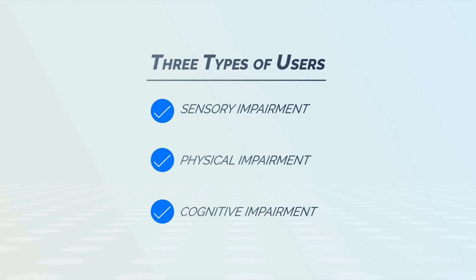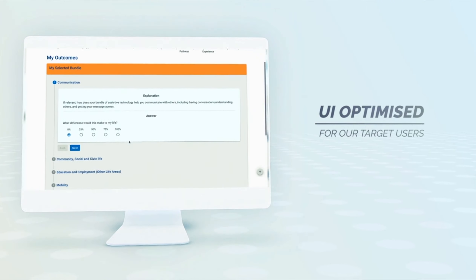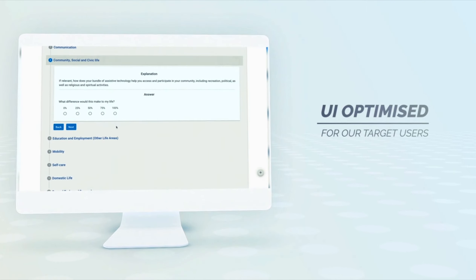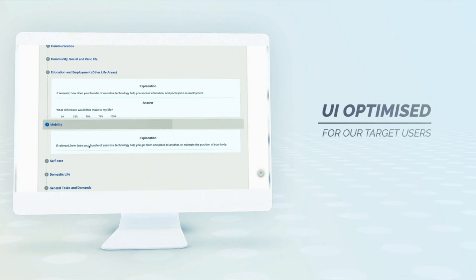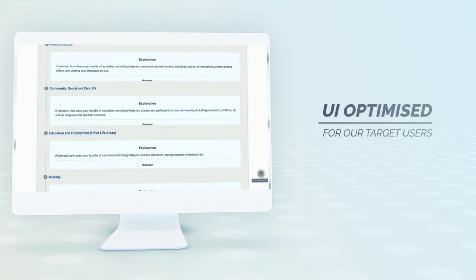We mainly target three categories of users: sensorially impaired users, which includes both vision and hearing impairment; physically impaired users, mostly referring to people with mobility issues; and cognitively impaired users, who have barriers to understanding. We have optimized the design and interaction of our webpages to conform to AT users' habits, which has been tested by real users and practitioners.